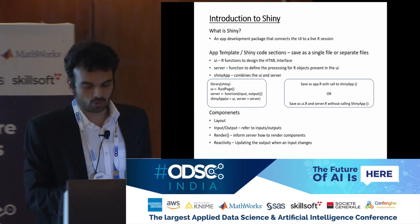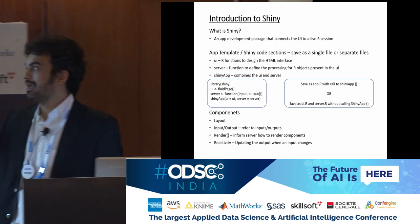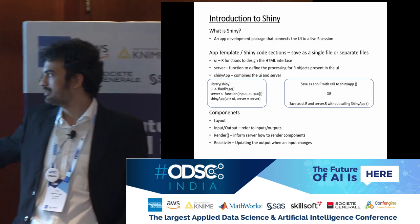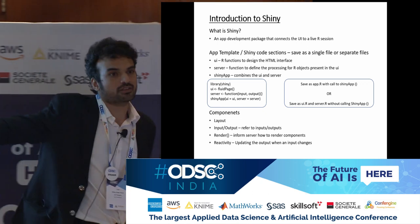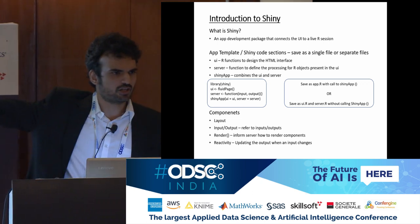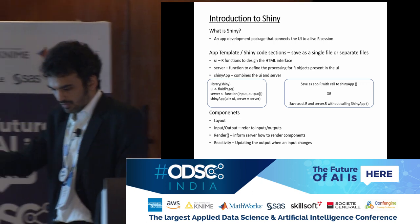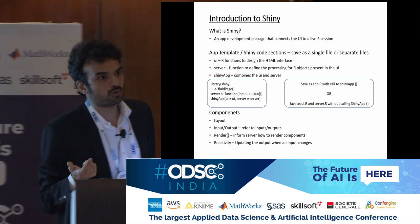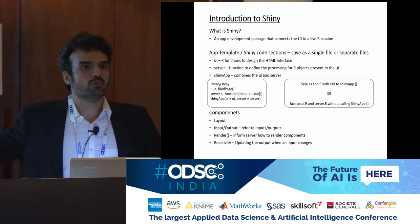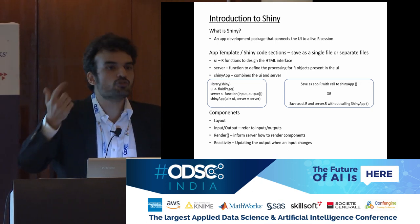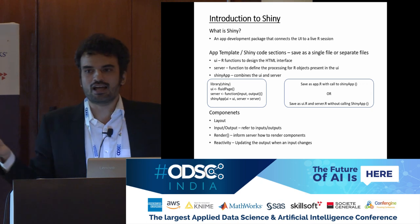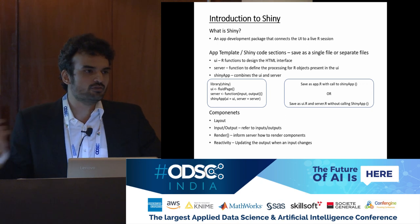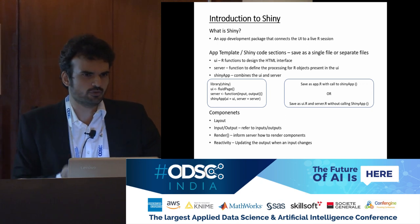You do not need to have both UI and server in the same file; you can have them in different files. If you have them in different files, you can do it without calling ShinyApp. The components are: you define the layouts, define the inputs and the outputs, when to render components, and what the reactivity is going to be. Reactivity is what happens when you click something or change something. You can also have buttons rather than selecting components and updating graphs — you can use buttons to update graphs if you run into latency issues.